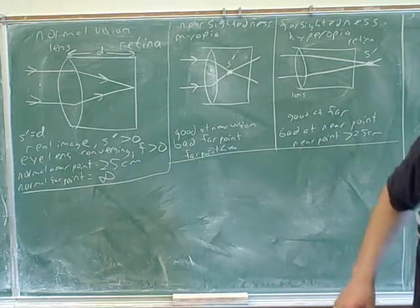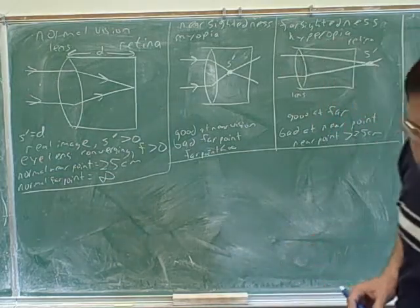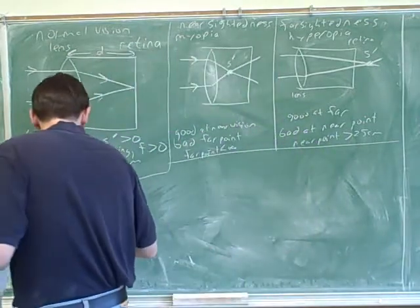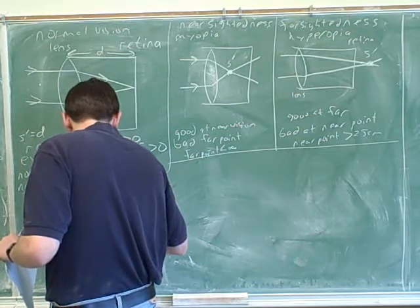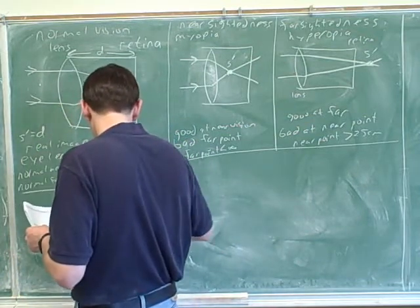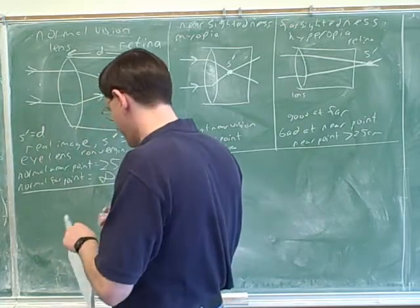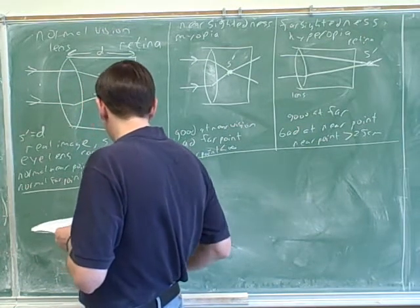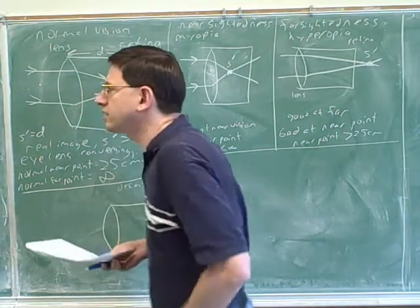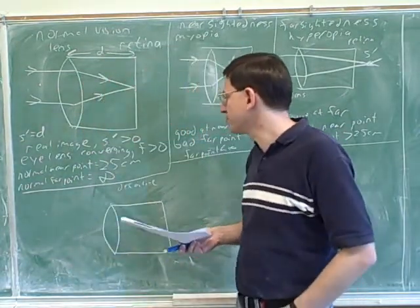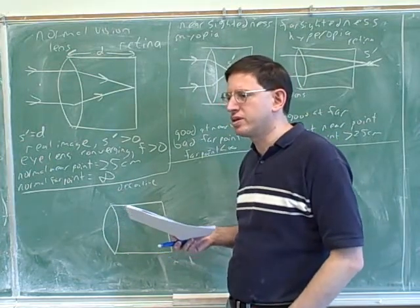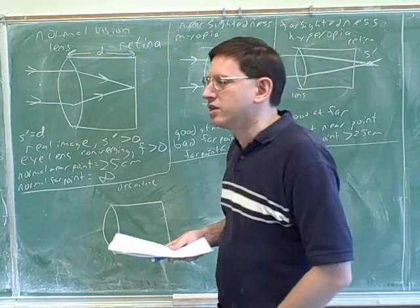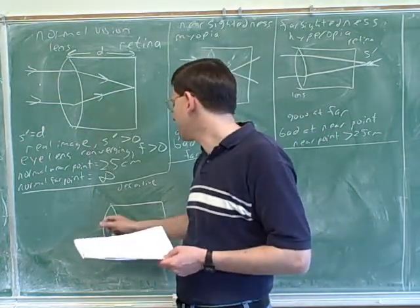Now we're ready to get into corrective lenses. What happens when you're wearing corrective lenses? We have a defective eye, and we're going to put another lens in front of it. We talked previously about multiple lenses — the image from the first lens becomes the object for the next lens. So if you're wearing glasses, your glasses are going to make an image that will become the object for the lens of your eye.